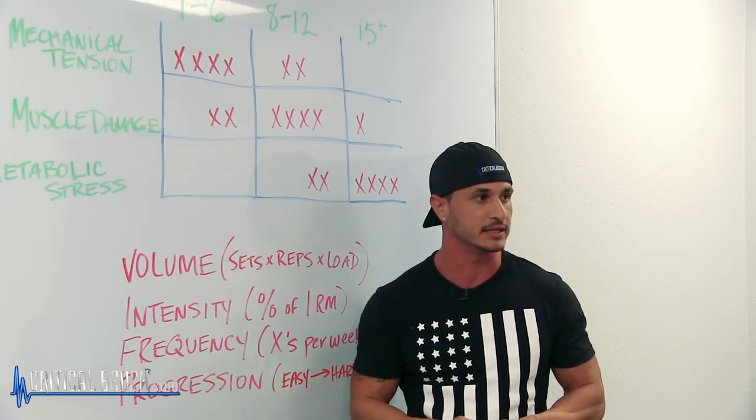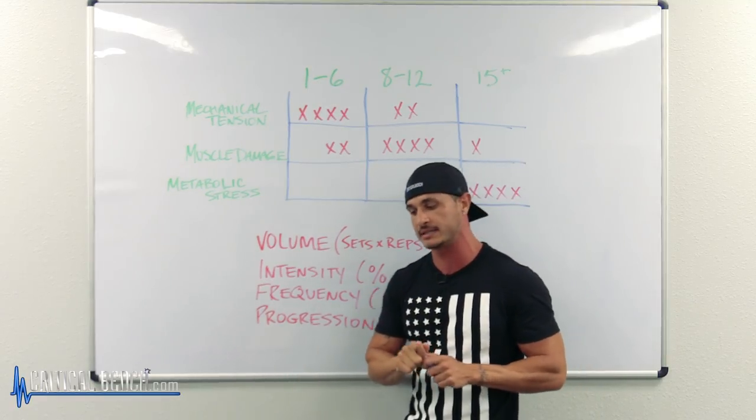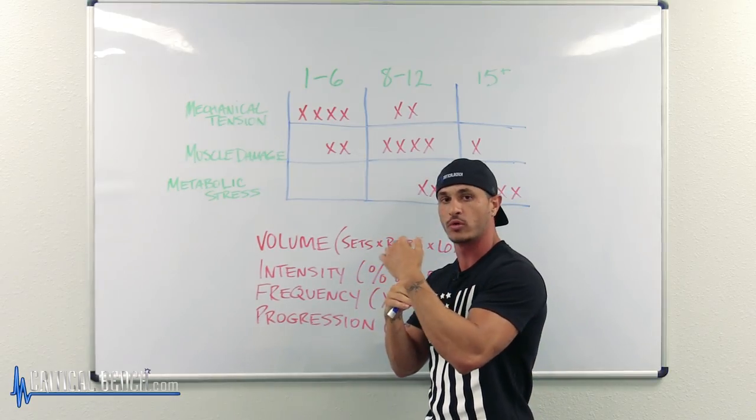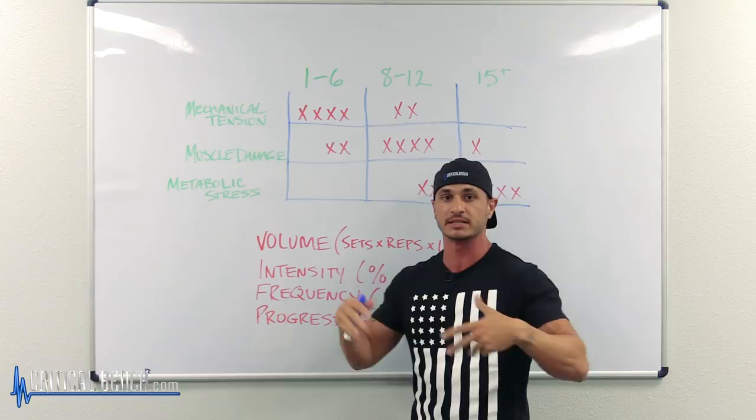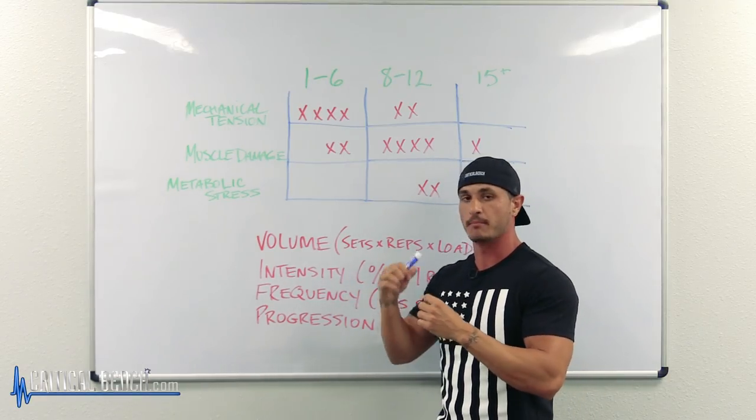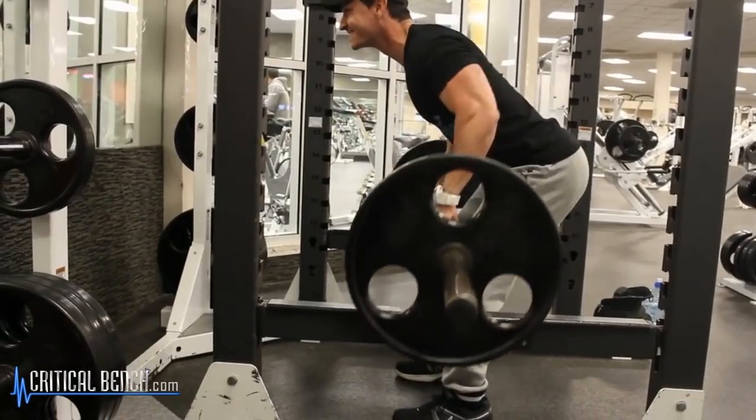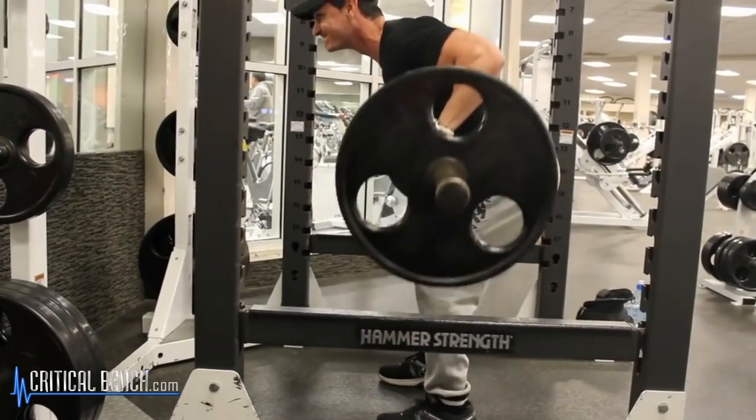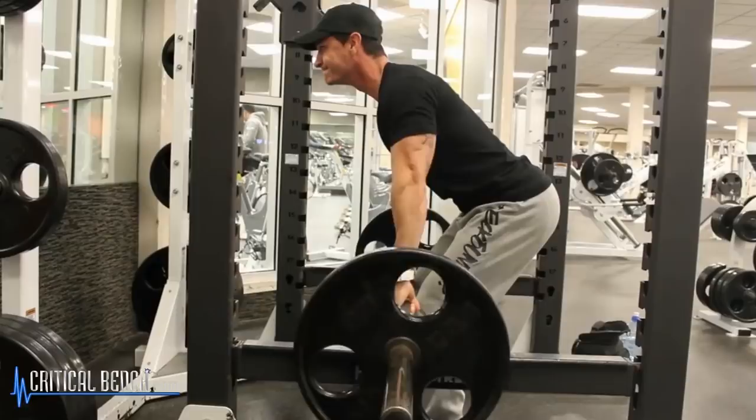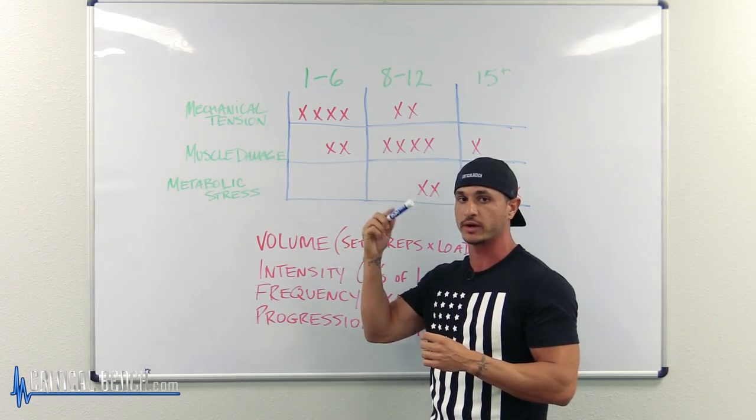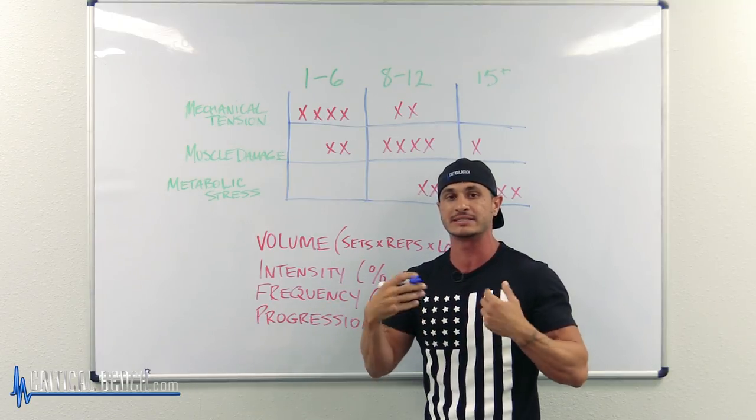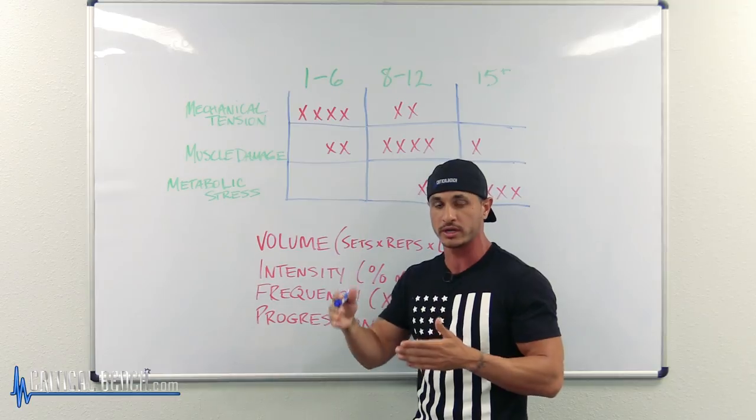Also, intensity is important because the research shows that when compared to moderate loads and lower or higher volume loads, which means it's a lighter weight, you're going to build more muscle with a moderate or heavy load. So when you're doing moderate reps or low reps, you're going to build more muscle than you are when you're doing higher reps, because the intensity matters. Now you can build muscle with a lower intensity and higher reps, however, from what we see, it's going to take about three times more work to get the same amount of muscle growth.